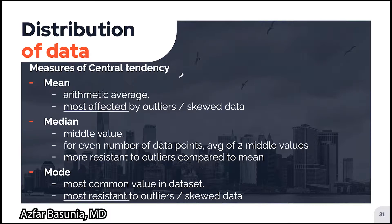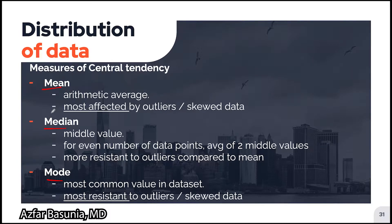There are three important measures of central tendency to know for your boards: the mean, the median, and the mode. The mean describes the arithmetic average of all the data points in your data set, and it is important to know that the mean is the most affected by outliers or skewed data.